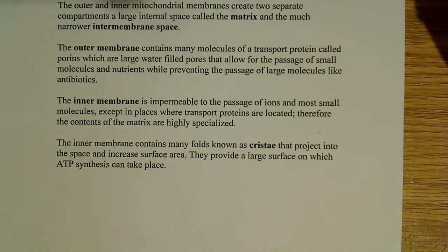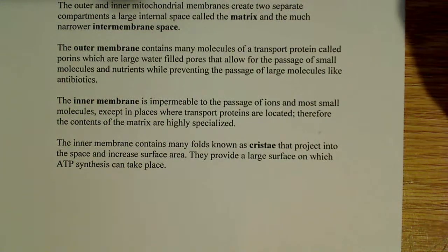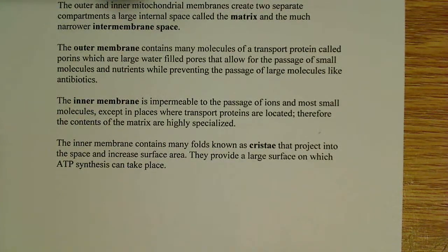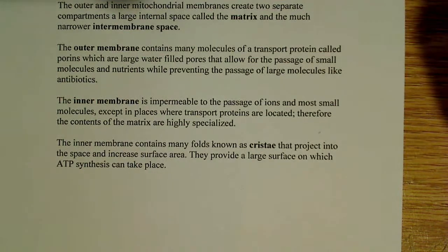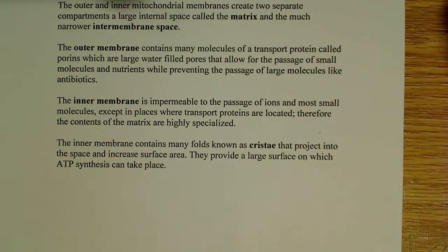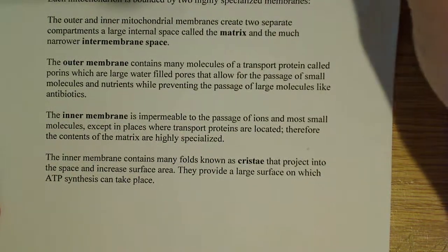The inner membrane contains many folds, or cristae, which increase the surface area and allow more space for the synthesis of ATP. The more surface area you have, the more ATP you can create. For example, mitochondria from heart muscle have a lot more cristae than those from skin, because the heart is constantly beating and contracting, requiring a lot more ATP. Without a larger surface area, you'd be short on ATP, which is not good for your heart.